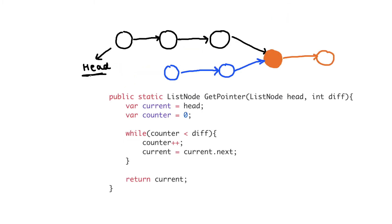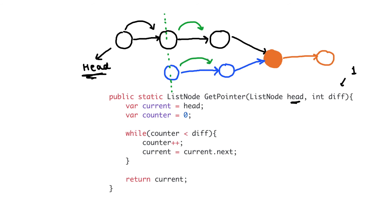Another function is getPointer — we provide the head pointer and a diff, where diff is the number of nodes to skip. For this example it is one. After skipping that number of nodes from linked list one, we return the current pointer. The benefit of returning that pointer is that we can now traverse both linked lists at the same time and determine whether the intersecting node exists between them.